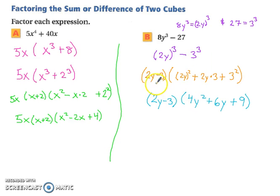Now we simply simplify. So we have 2y minus 3. It stays 2y minus 3. 2y, the quantity squared, leaves you with 4y squared. Plus 6y. And then 3 squared equals 9. So you have effectively factored that one.